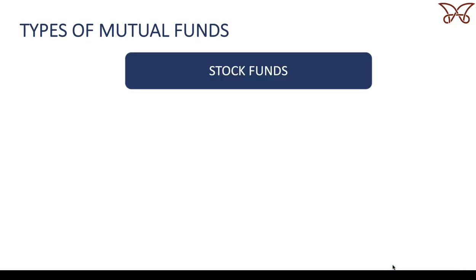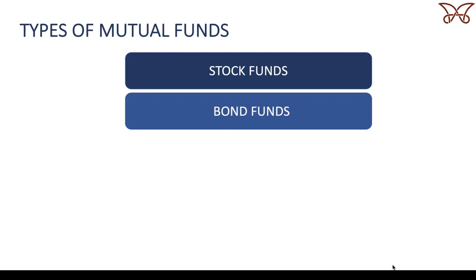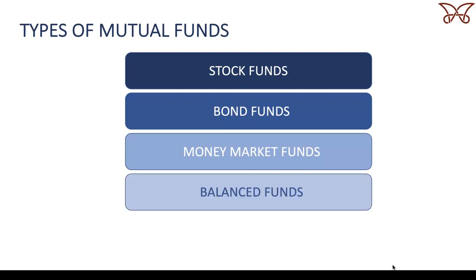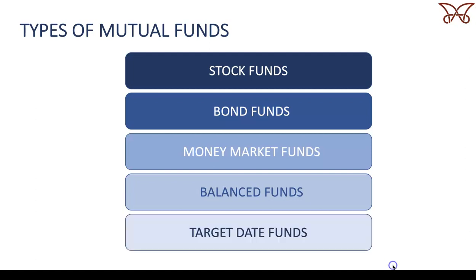There are mutual funds that invest in all kinds of things, including: stock funds, which invest in stocks only; bond funds, which invest in bonds only; money market funds, which invest in very safe short-term debt only; balanced funds, which invest in a mix of stocks and bonds; and target date funds, which invest in a fully diversified mix of investments that becomes more conservative as you near retirement. Another important distinction is between index mutual funds, which only aim to match the market's returns, and actively managed funds, which try to pick and choose the best investments in order to beat the market.